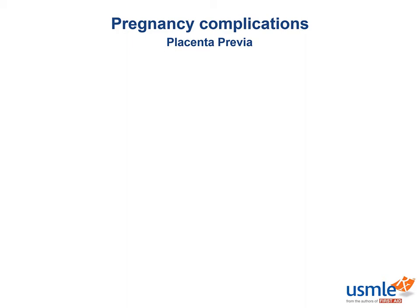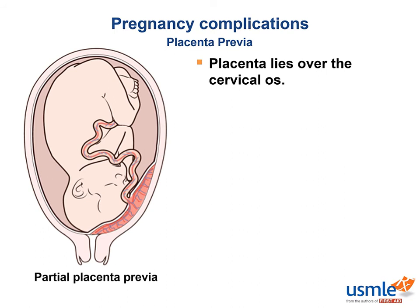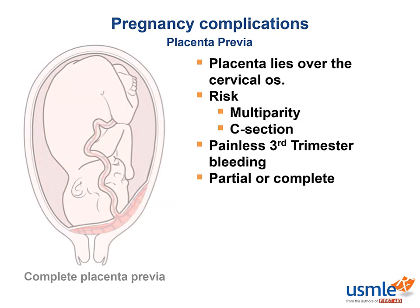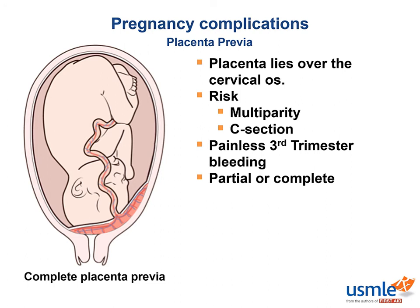Placenta previa is when the placenta attaches to the lower uterine wall, possibly blocking the internal os, which is where the uterus opens into the cervix. Risk factors include multiple gestations and previous C-section. This is another major cause of late second and third trimester bleeding, but here you have painless bleeding — compared to abruption, where you get painful bleeding. You can observe either a partial or complete occlusion of the cervical os.